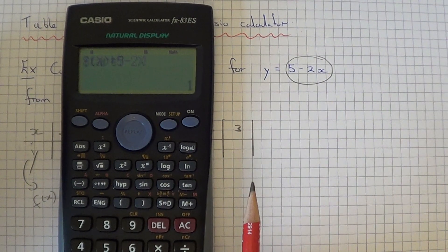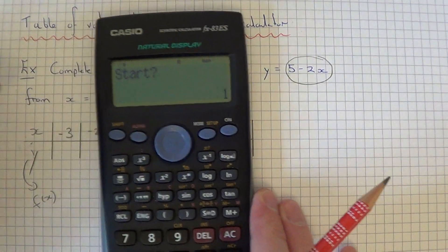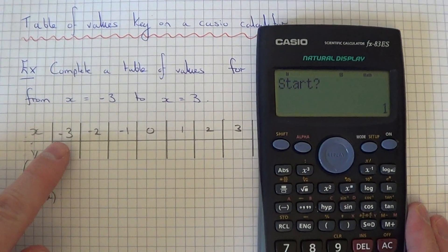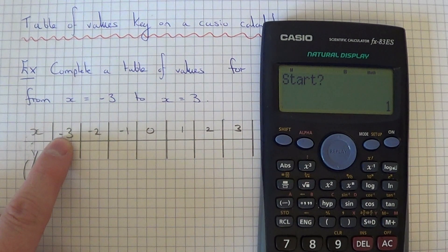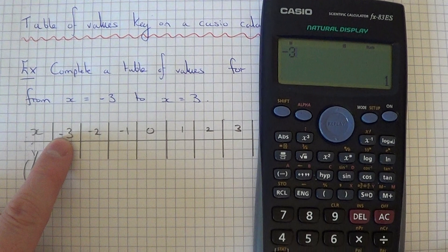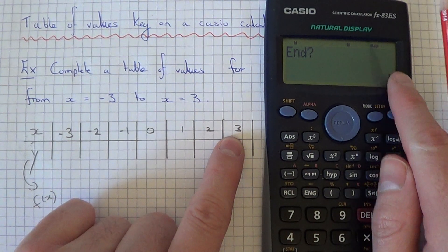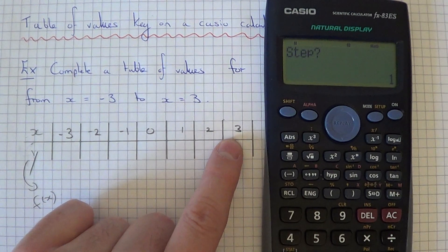If we hit the equals now, it says start. We want to start our graph at minus 3, so if we overtype this 1. We want to end our graph at plus 3, so if we overtype the 5 to 3 and hit equals.